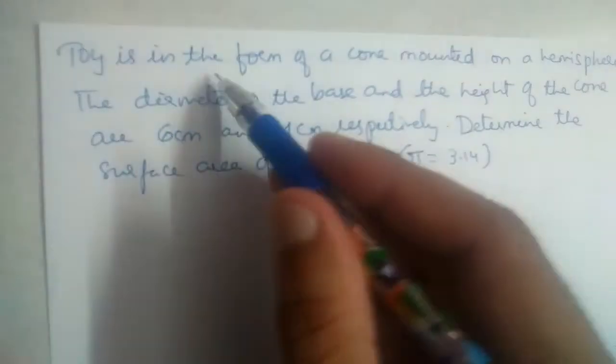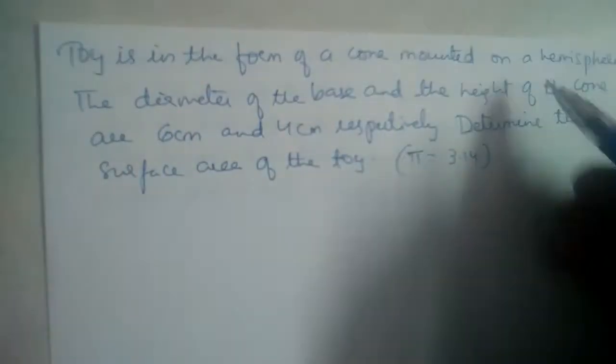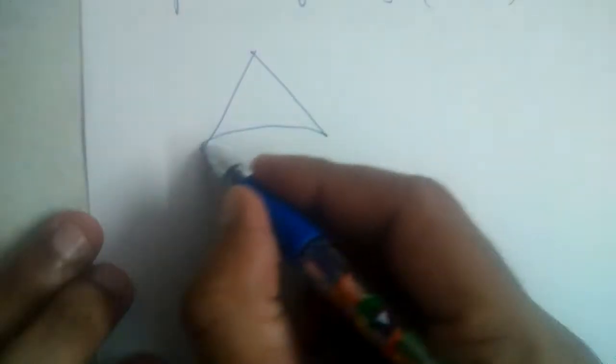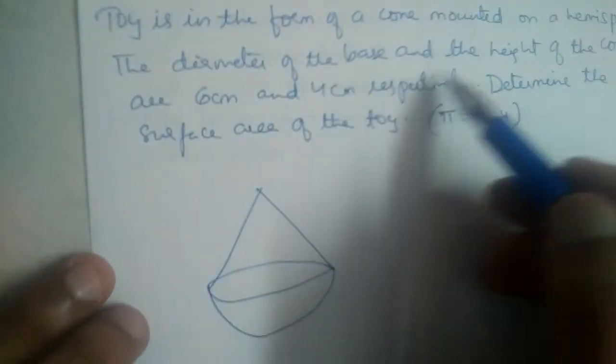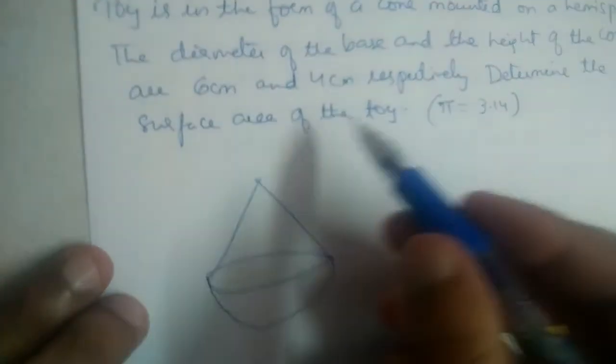Okay, so we have a toy which is in the form of a cone mounted on a hemisphere. That means we have a cone on a hemisphere like this.